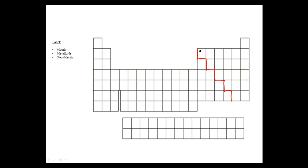The metalloids are any elements that touch one full side of the staircase. So as long as they touch one full side of the staircase, it is a metalloid. The only exception to the rule is aluminum, which is a metal. Anyone that touches a full side of the staircase is considered to be a metalloid. If it just touches a corner, that is not a metalloid — you must touch one full side.